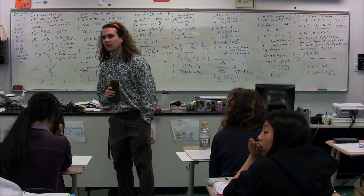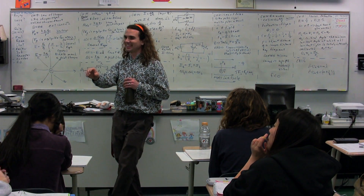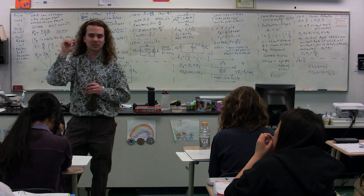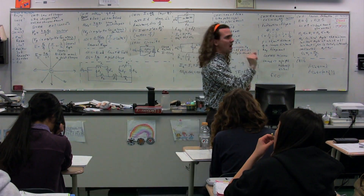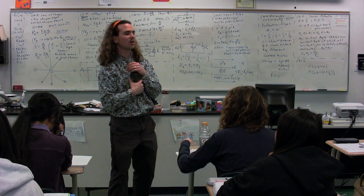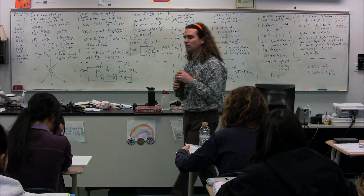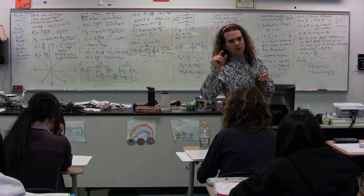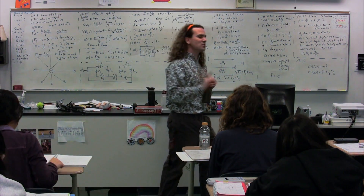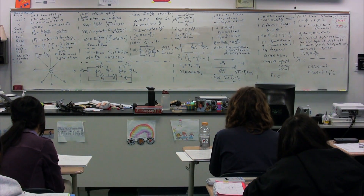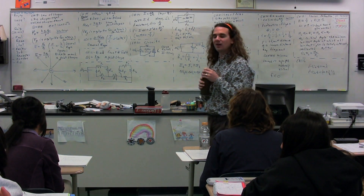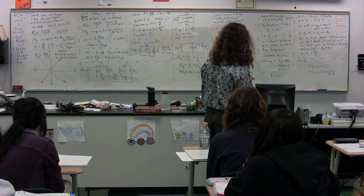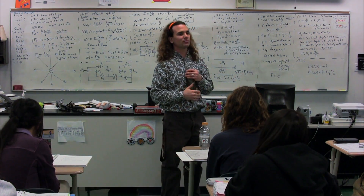For a double slit experiment it would be called the slit separation. Sine of theta — theta again is the angle between the ray and the normal. M stands for the order number. What are possible values for the order number? Zero, plus one, minus one — positive integers, negative integers, and zero. Lambda stands for wavelength.